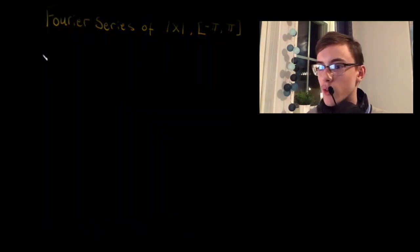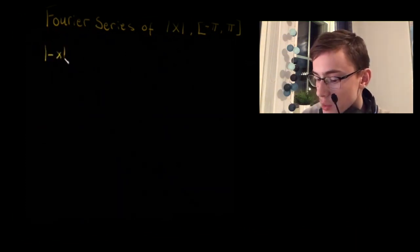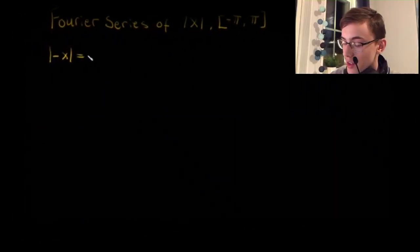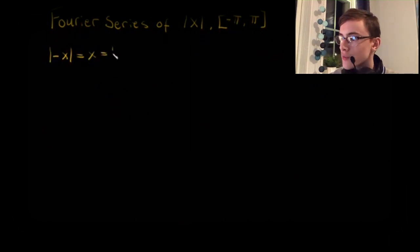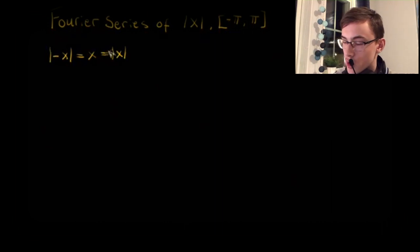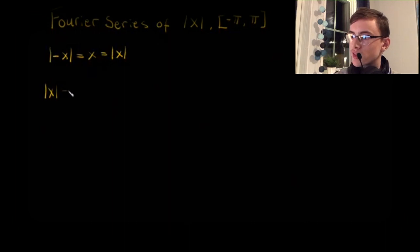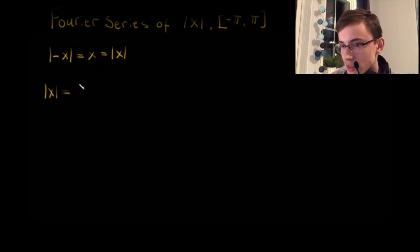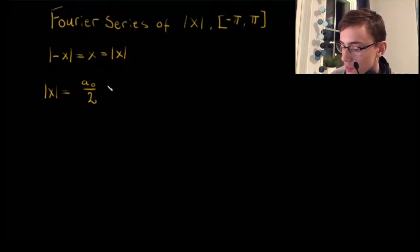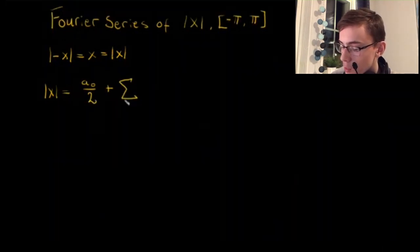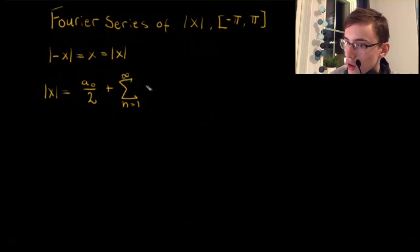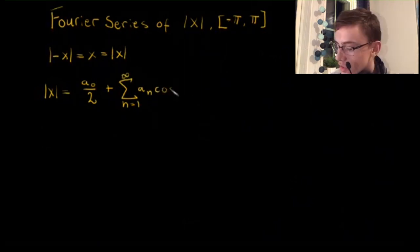The absolute value is an even function — that is, the absolute value of negative x equals the absolute value of x — and thus by the Fourier series for even functions on symmetric ranges, |x| can be expressed as: |x| = a₀/2 plus the sum from n=1 to infinity of aₙ cos(nx).